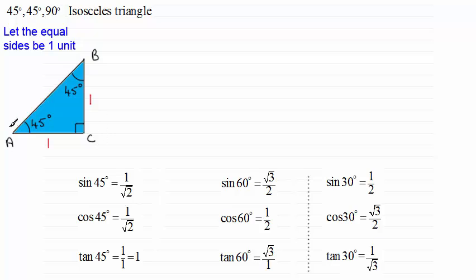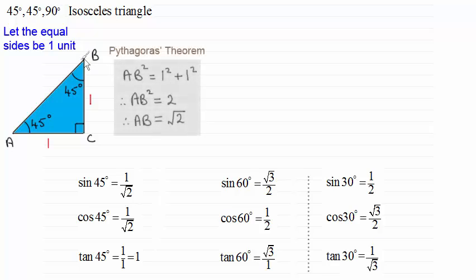Now we can work out the third side AB just by using Pythagoras's theorem. And doing that gives us the hypotenuse squared, AB squared, equals the sum of the squares of the other two shorter sides. So AB squared equals two and so AB equals root of two. So marking that in here for AB, we've got the root then of two.